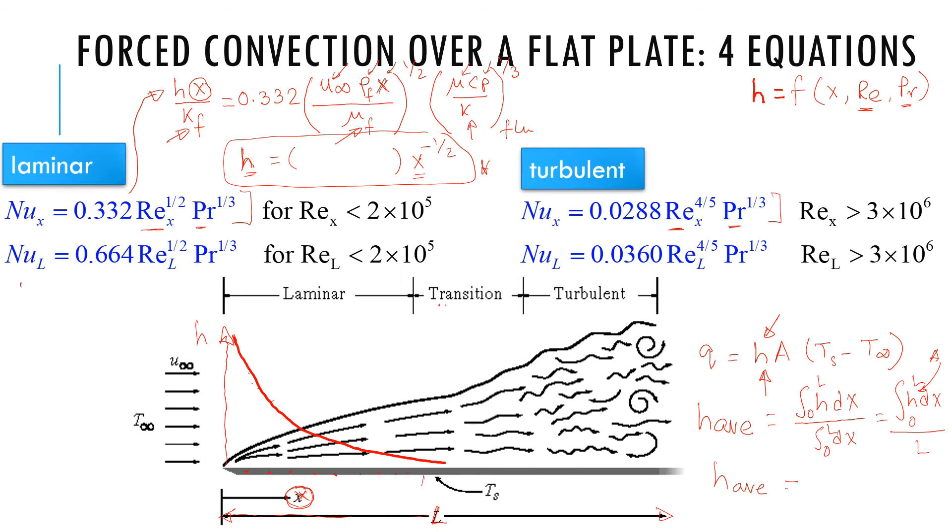This H average is written as H_L. That's why you have a second equation here for laminar. Notice that instead of X, it has L. It is not X equal to L because then you will get the same coefficient. Here, the coefficient is different because as you plug in H here and then you simplify, then you get this equation.